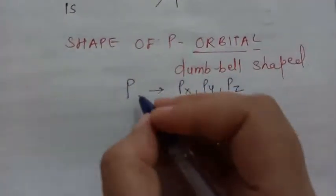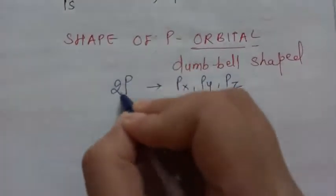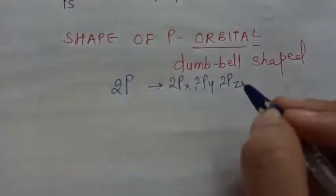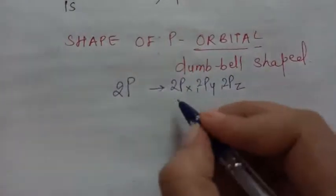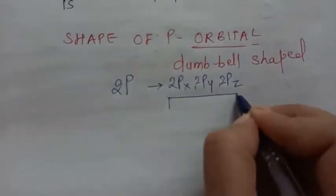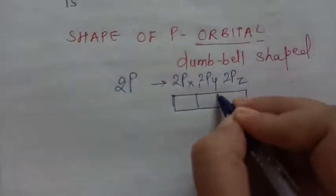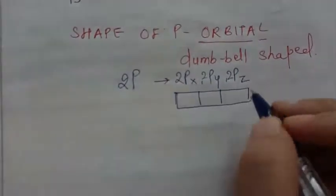Like, suppose let me take an example of 2p. So what do we call the subshells? 2px, 2py and 2pz. Here we can say that 2p subshell has three orbitals, and they are designated as 2px, 2py and 2pz.